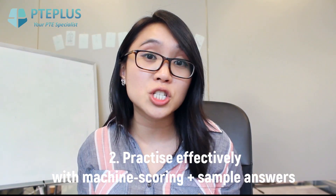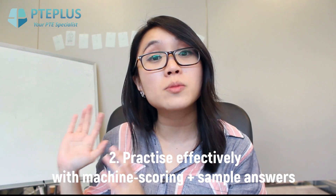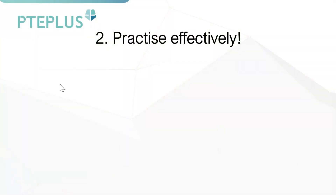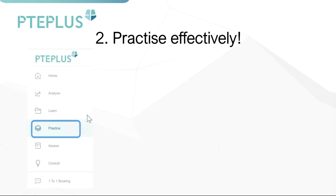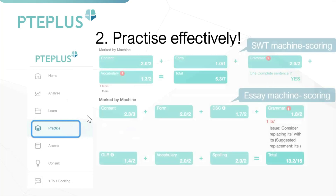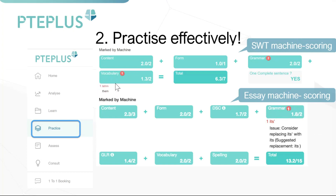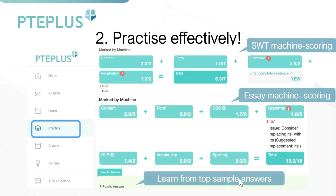Apart from practice in the lessons, you also need to be doing as much practice as you can on your own. To be most effective, you need to see how the machine is scoring you and learn from top score sample answers. In the Practice section of your all-in-one course, every question you do is scored by the machine in detail for every single criteria — you can see the scoring for Summarize Written Text and for Write Essay — and it helps you identify mistakes and how to correct them. Scrolling down, you'll also find top score sample answers for every single question.